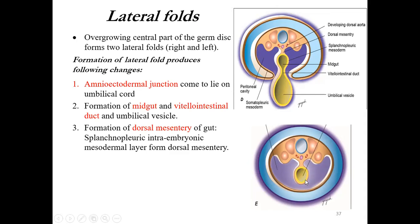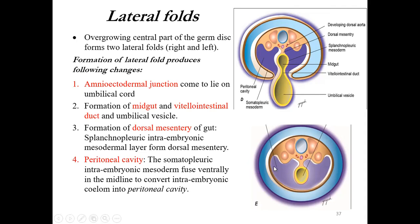The splanchnopleuric intraembryonic mesodermal layer forms the dorsal mesentery of the gut, as the gut is covered by splanchnopleuric mesoderm. The fourth change from lateral folding is the formation of the peritoneal cavity: the somatopleuric intraembryonic mesoderm fuses ventrally in the midline, converting the intraembryonic coelom into a peritoneal cavity. The peritoneal cavity is lined on the outer side by somatopleuric mesoderm and on the inner side by splanchnopleuric mesoderm.